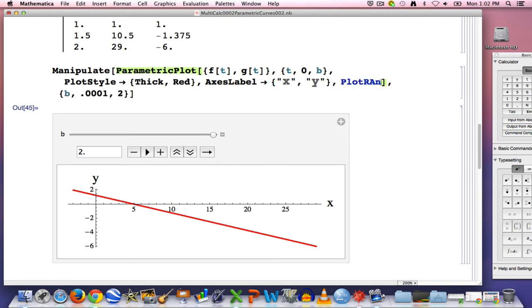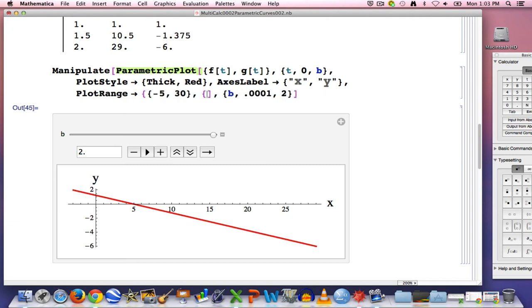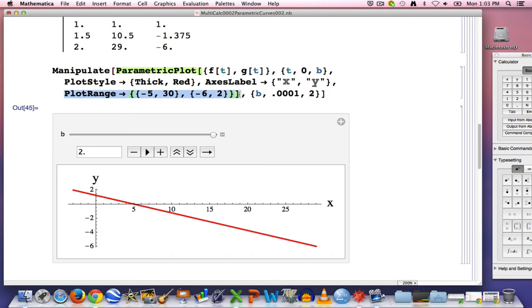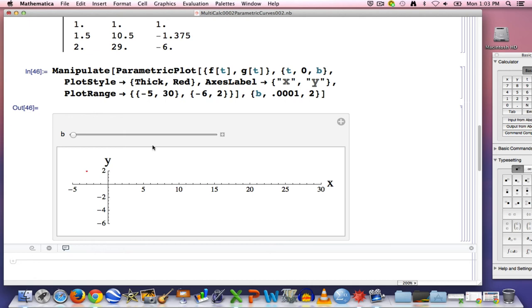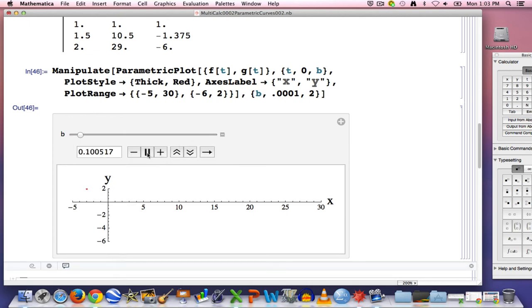Can that be fixed? Yes, with one more option called plot range. Type as I'm typing, then arrow. Then in a list, you put the range for x. Let's say maybe we'll let x go from negative 5 to 30, and then you put a comma and the range for y, like negative 6 to 2. This will keep that plot range, that window, so to speak, fixed as the animation happens. Now at the start, you just see a little tiny line segment there, and then we play it and we see the motion. And what I want you to notice is that the bug is speeding up. It's not a constant speed to the motion. It starts out slow and ends up going pretty fast by the end.